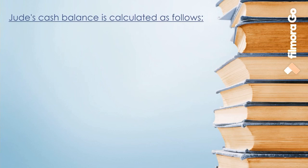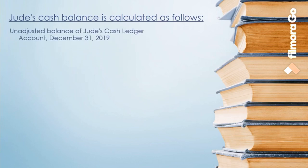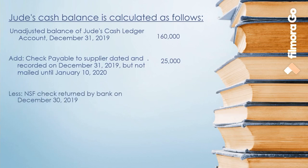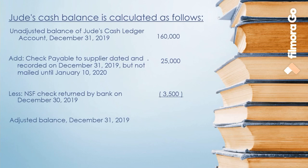After analyzing the transactions, we can calculate the adjusted cash balance as follows: starting balance per ledger on December 31, 2019: $160,000. Add: check payable to supplier dated and recorded December 31, 2019 but not mailed until January 10, 2020: $25,000. Deduct: NSF check returned by the bank: $3,500. Adjusted cash balance, December 31, 2019: $181,500.